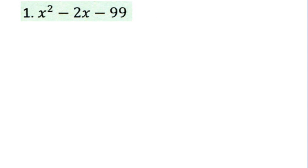In this first instance, we have problem one, which is a quadratic trinomial that, if factorable, is going to be able to be written as a product of two linear binomials. Here we have x squared minus 2x minus 99, and so what we're looking for is two numbers which, when multiplied together, equal negative 99, yet when added together, equal negative 2.